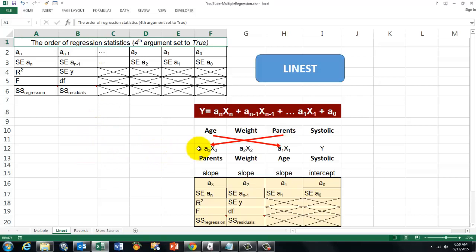But as I said already, be aware that the last one of the independent variables, the parents, will be the first one in the display. So the slope of parents will be first, A3, A2, A1, and finally the intercept.